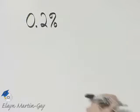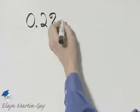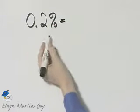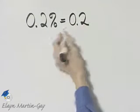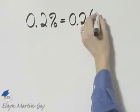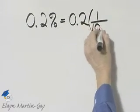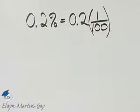Let's write this percent as an equivalent fraction, so keep in mind what the percent symbol means. I'll go ahead and write down my 0.2, then remember percent means per hundred, so as a fraction, the percent symbol means one over one hundred.